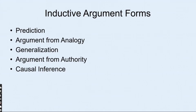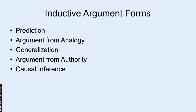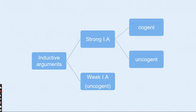Generalization means drawing a conclusion about a whole group from selected examples. For instance, if three apples are very sweet, you claim the whole box is sweet. Argument from authority is when an expert has concluded something and we accept it on that basis. Causal inference is based on cause-to-effect or effect-to-cause reasoning — for example, if I put something in the freezer, I conclude it will be frozen.